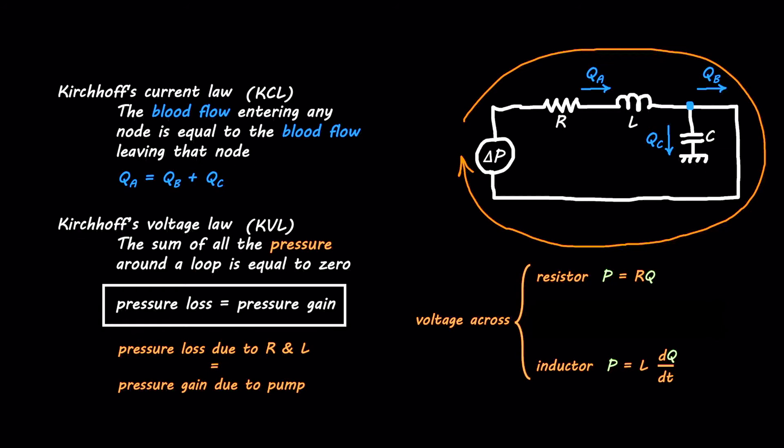Again, let's replace all the voltages and currents in these equations by pressure and flow rate. So, using these equations, now we can get back to this loop that we have here. The pressure loss due to resistor is R×Q, and the pressure loss due to the inductor is L×dQa/dt, because the flow rate that is going through these two elements is Qa. And then it equals delta P.